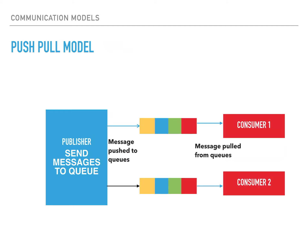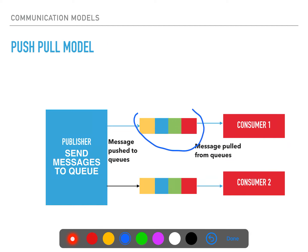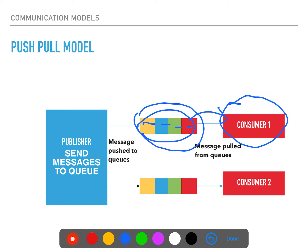The push-pull model is something we see with emails on mobile phones. As emails arrive, you can pull them from the local cache to read them. In this model, the publisher sends messages to a queue one by one. The consumer then pulls messages from the queue — for example, when you swipe down in your email app after 30 minutes, all queued messages are pulled automatically to the consumer.